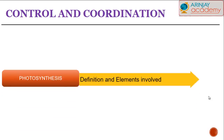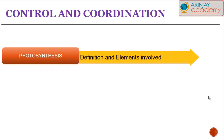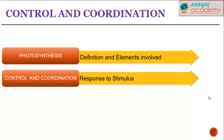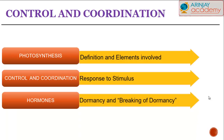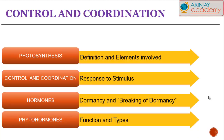Let's have a look at the various stages or steps that we will be covering. First of all, we'll have a look at what photosynthesis is and what elements are involved. We'll look at control and coordination within a plant in response to a stimulus, the types of hormones, what we mean by dormancy and the breaking of dormancy, and finally the different functions of the different types of hormones.